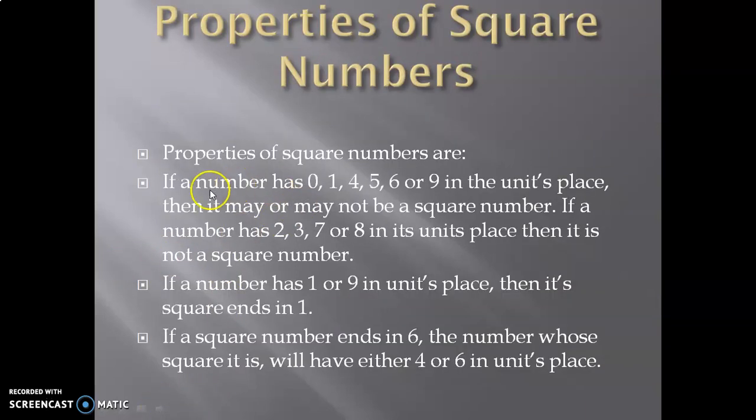Properties of a square number: If a number has 0, 1, 4, 5, 6, or 9 in the unit's place, then it may or may not be a square number. If a number has 2, 3, 7, or 8 in its unit's place, then it is not a square number.